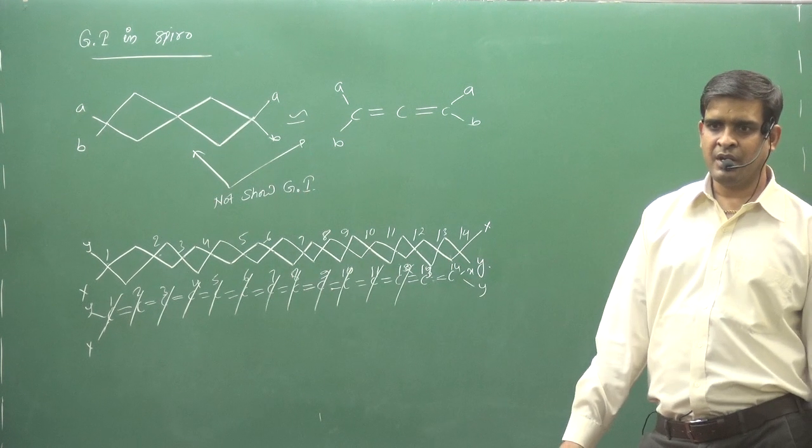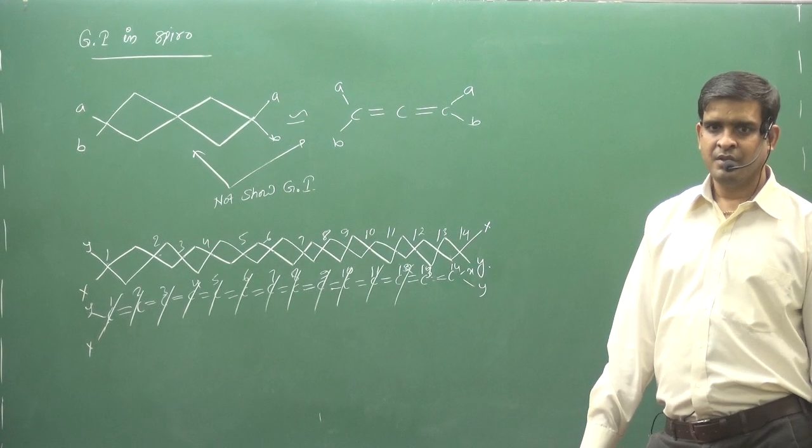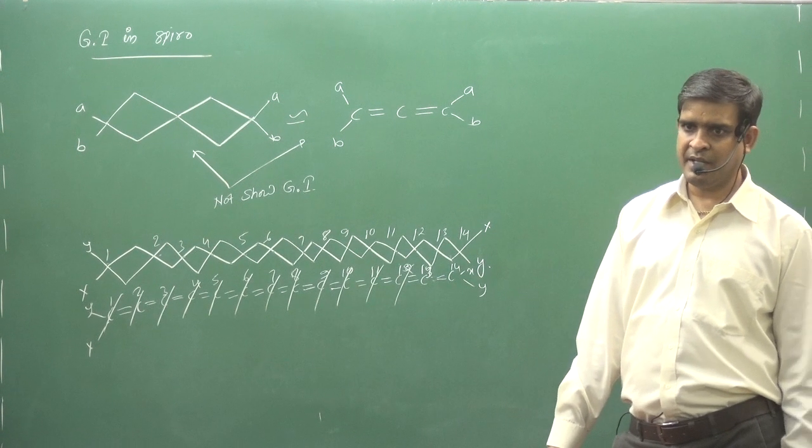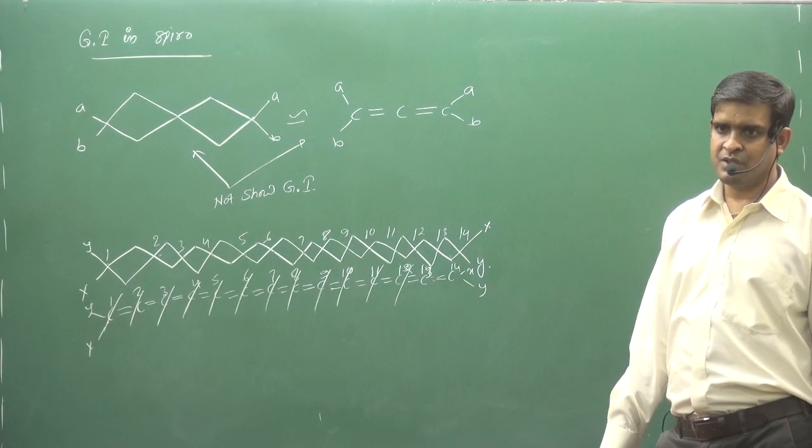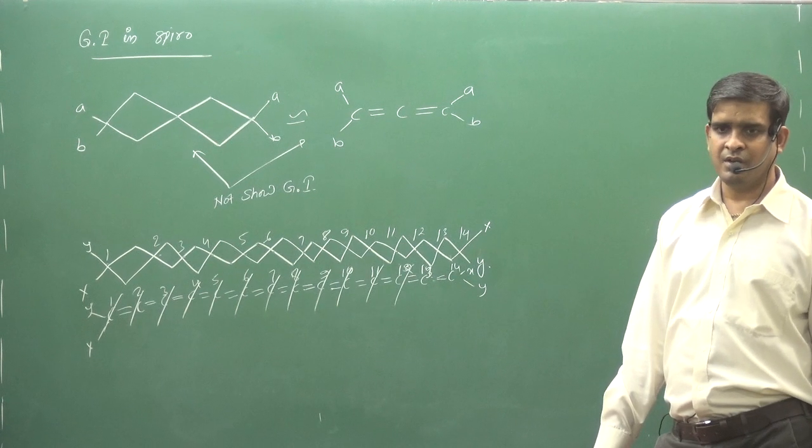So, I have made an order from you. Two, four, six, eight. Whatever. Even number. It will make all the alkenes and it will show the GI. And the odd number, it will show the cumulenes and it will show the GI.